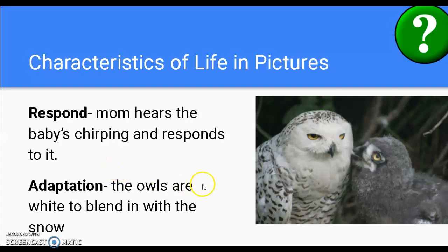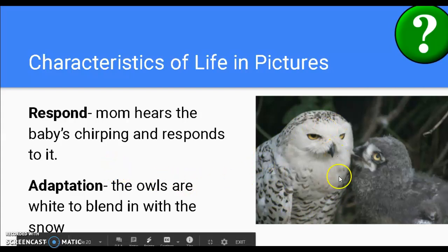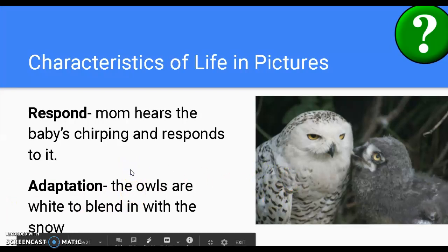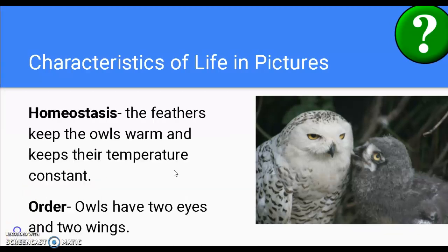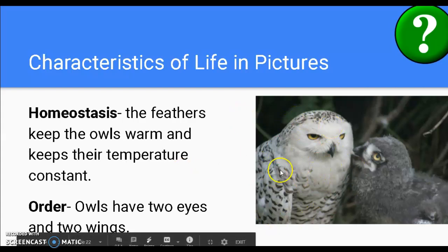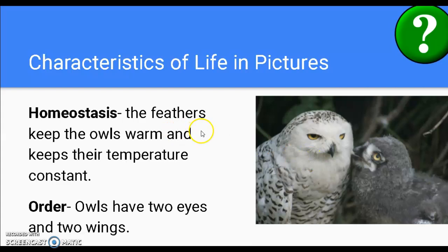I can see that the owls have adaptations — they are white, which will help them blend in or camouflage with snow. Homeostasis is a tough one to see in pictures, but I can say that these are snowy owls that live in cold environments, and their feathers are going to help keep them warm and keep their temperature constant.